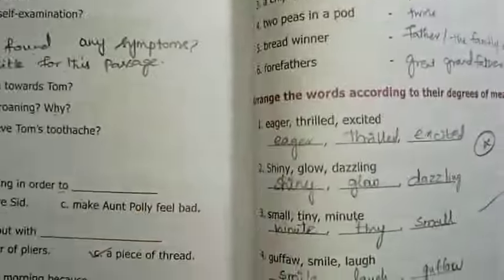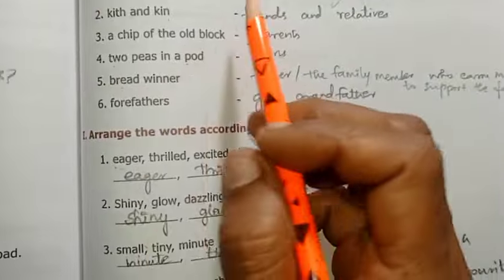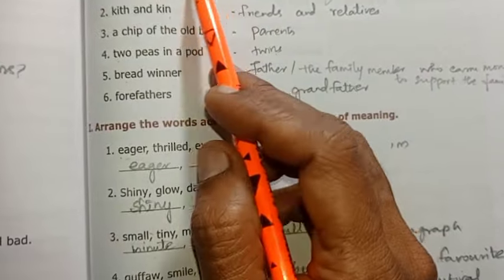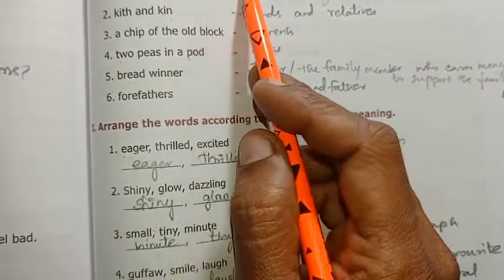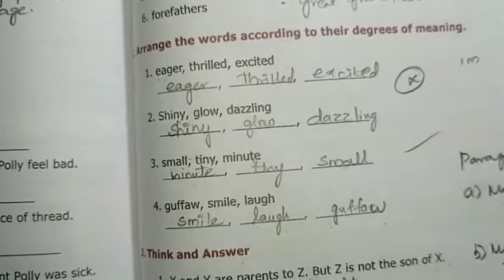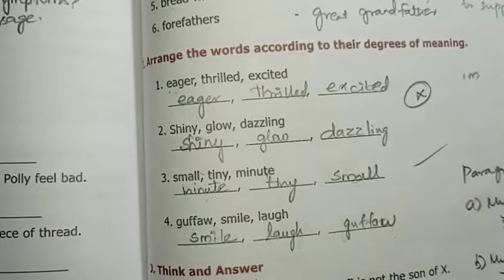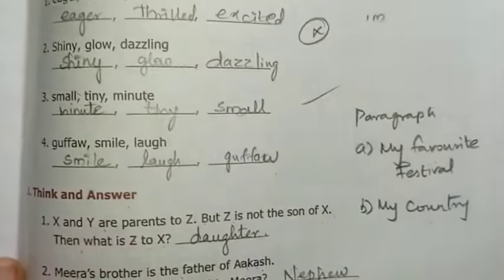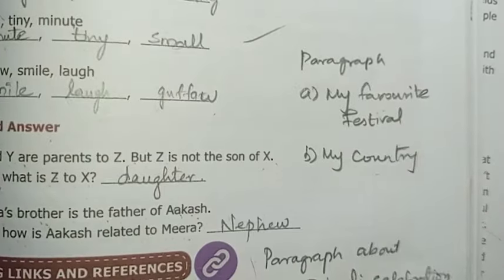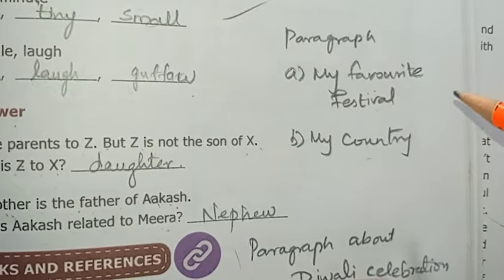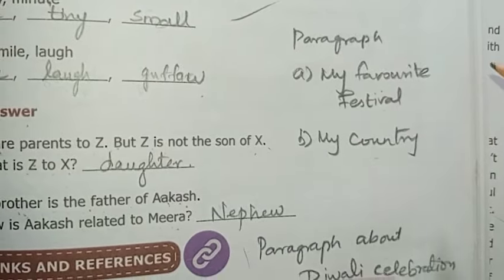At the end, Monday morning — if you look at this, one marks full, true or false. Next, think and answer: did Aunty Polly believe Tom's groaning — why? Relationship term for the clues. Add the degrees of meaning.